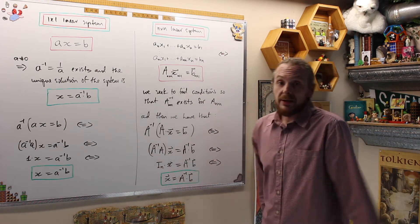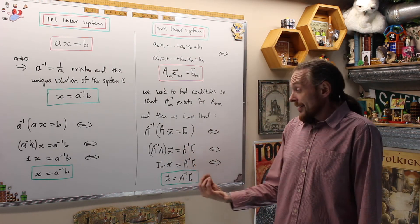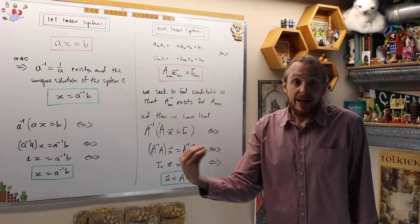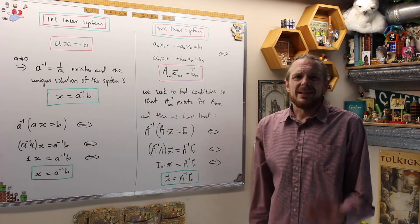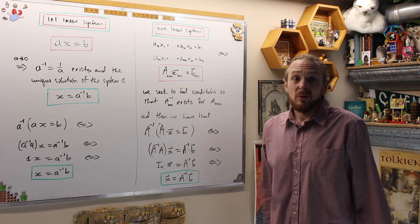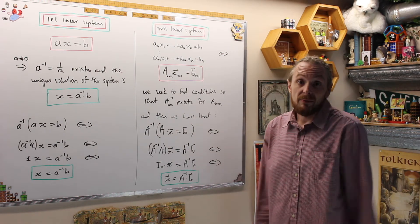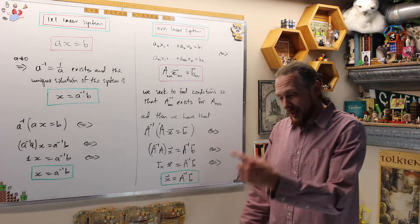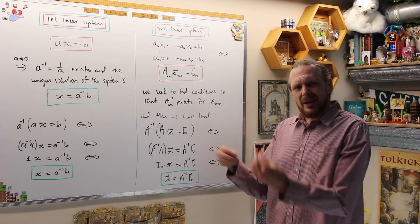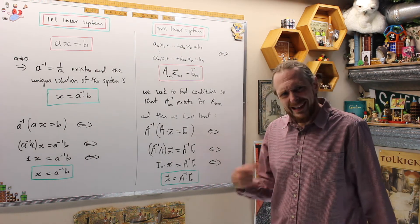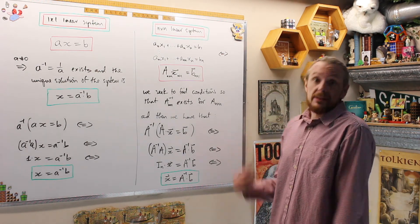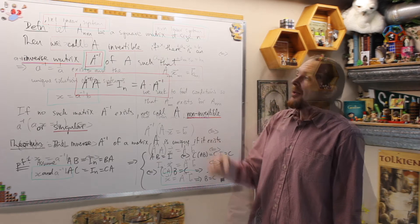So what we're going to do now is define the inverse of a matrix, then seek two different separate methods for finding it, because it's not easy to find at first, and we want conditions for when it exists. It doesn't always exist.